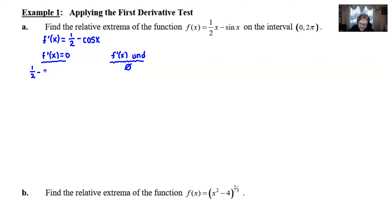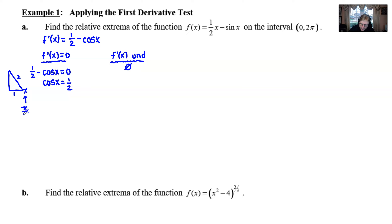Now we set that derivative equal to zero and figure out where it's undefined. This derivative is defined everywhere — you typically worry about the derivative being undefined when you see an X value in a denominator, which is the most common case. So we focus on solving ½ - cos(x) = 0, which is just saying cos(x) = ½. Hopefully you know a little trigonometry, because it's going to be very handy in problems involving trig.